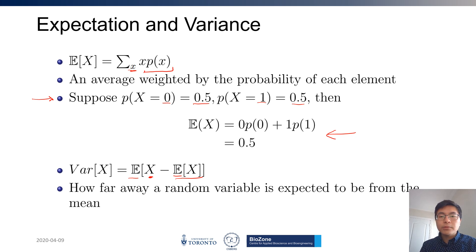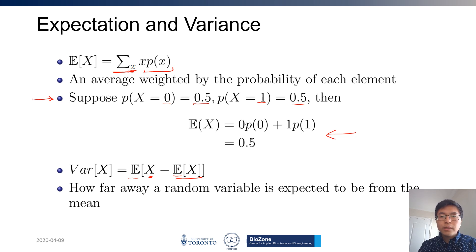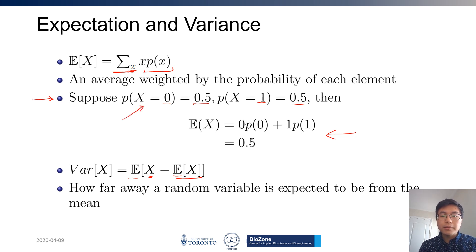In the Gaussian example, variance specifies how distributed or how widespread your events can be. This is a general framework — x could really represent anything. It's a discrete number if I use a summation, or it could be a real number. Numbers can represent a lot of objects too. In our case, we can talk about proteins.